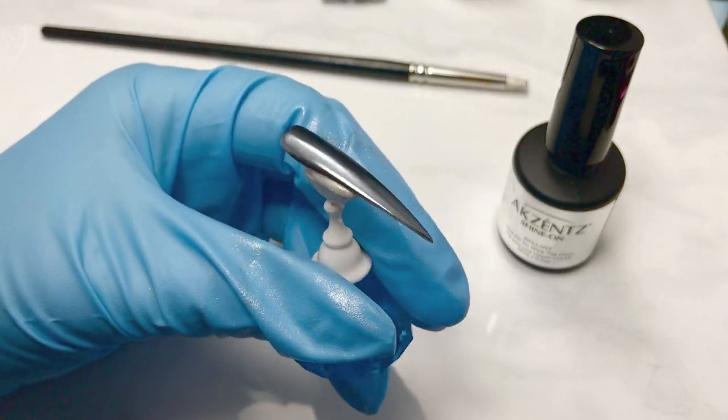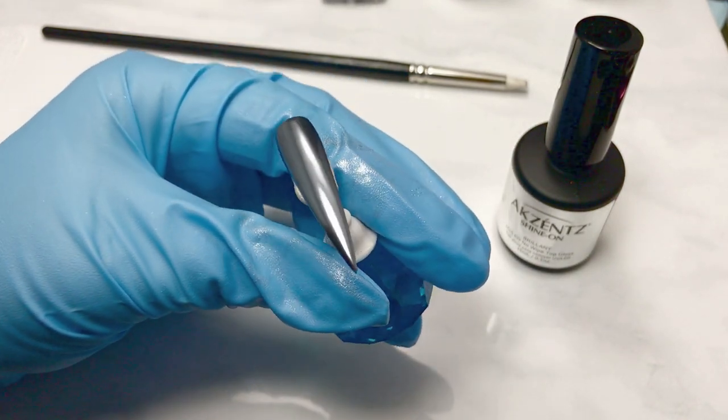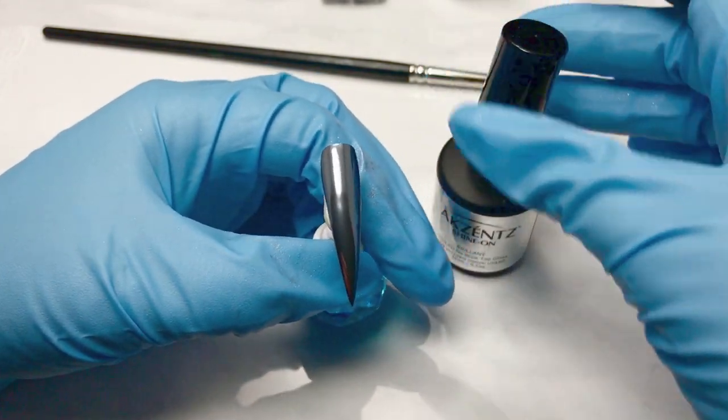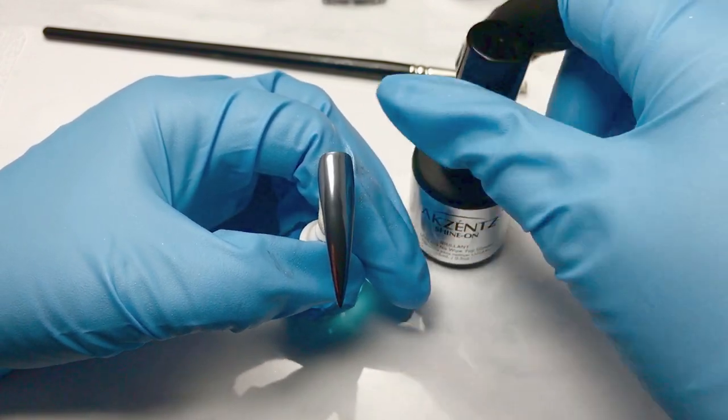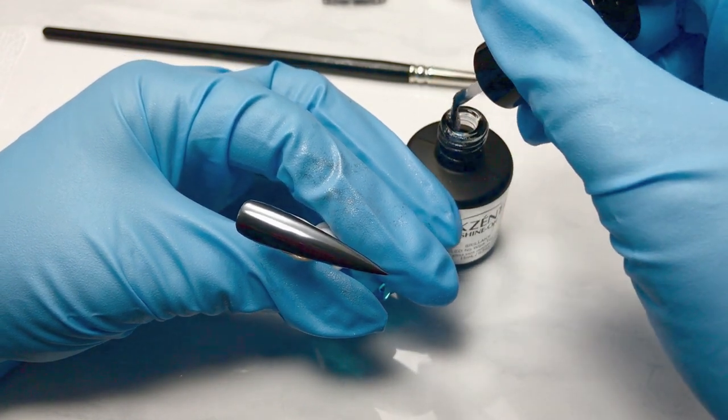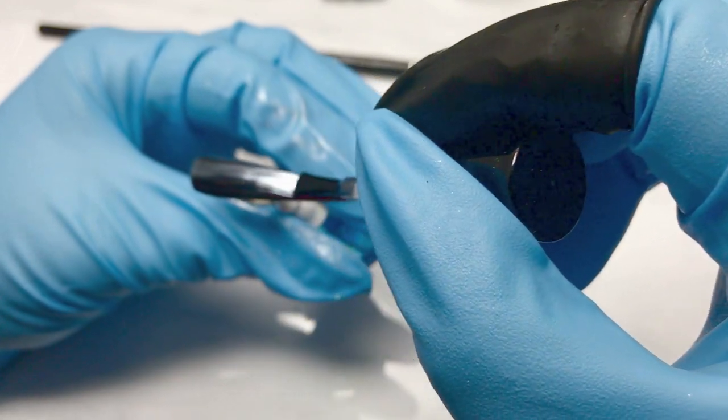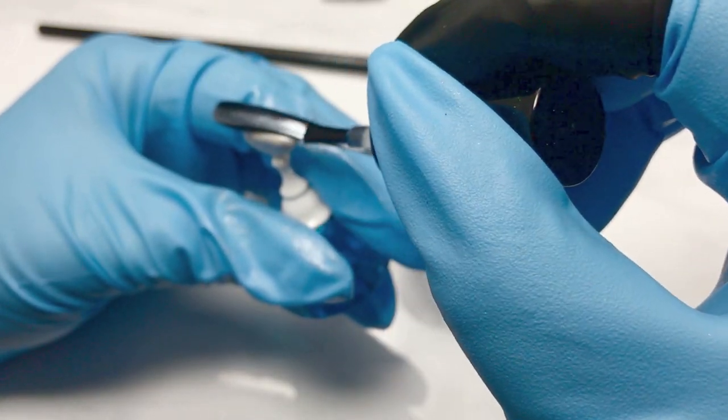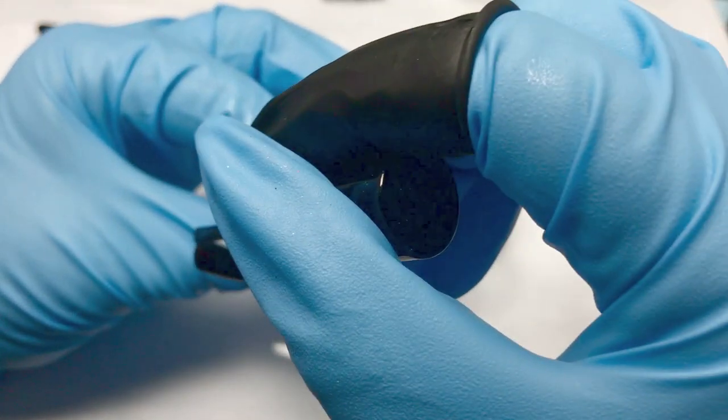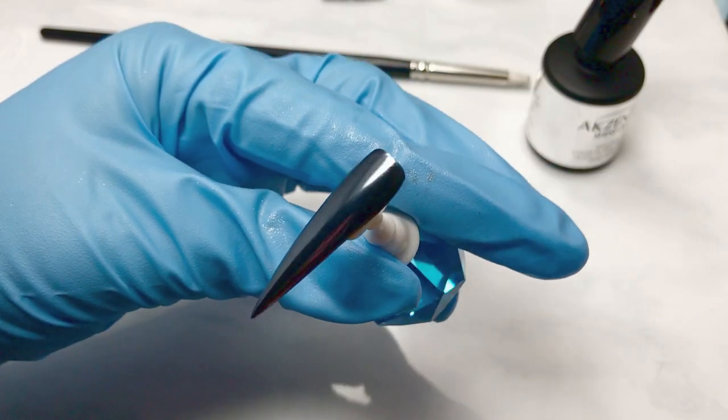So that nail is ready to go ahead and topcoat. Again a no wipe topcoat is required for that. You can use the Intense Seal, you can use accents, whichever your preference is. I like the accents because it's easy to float the product on without any brush strokes, so you get an instant kind of smooth finish with that.